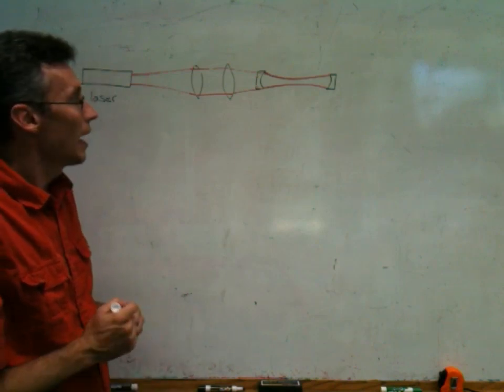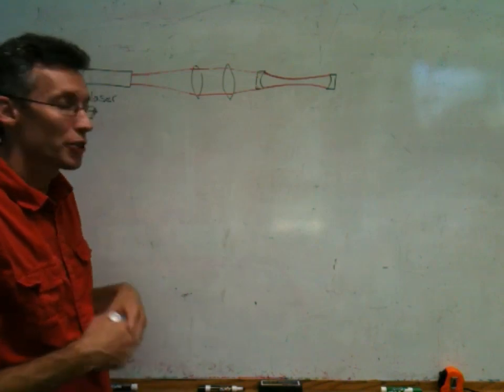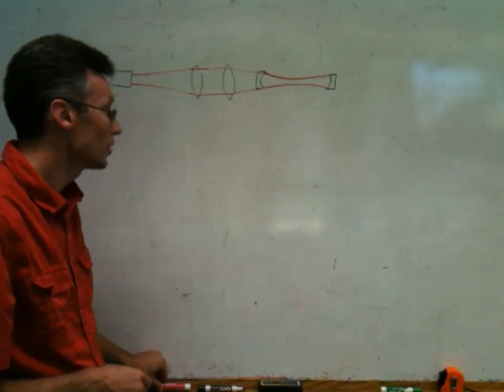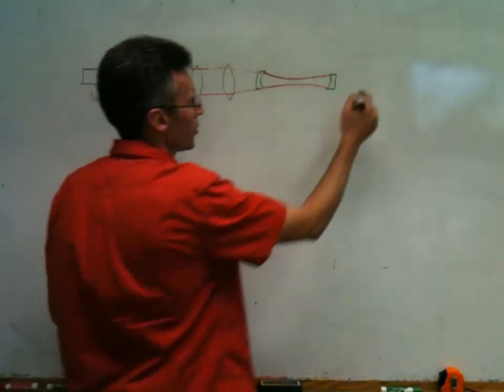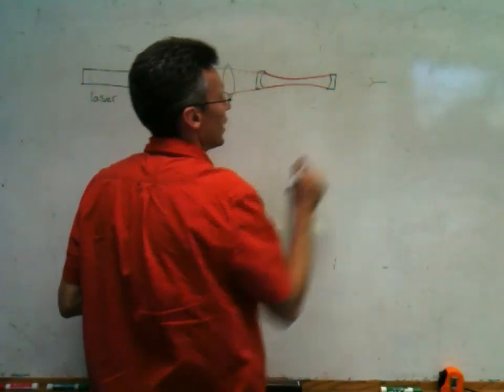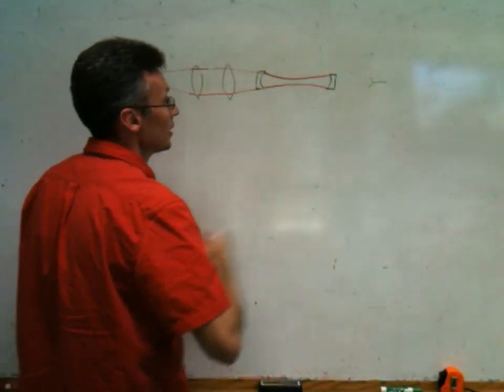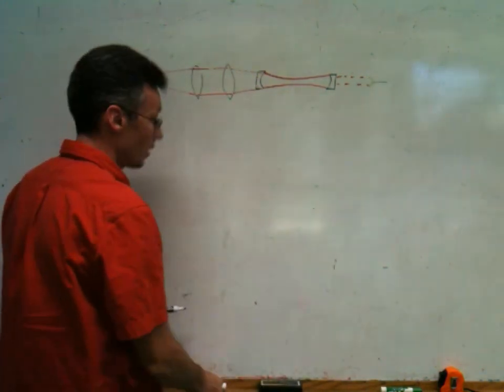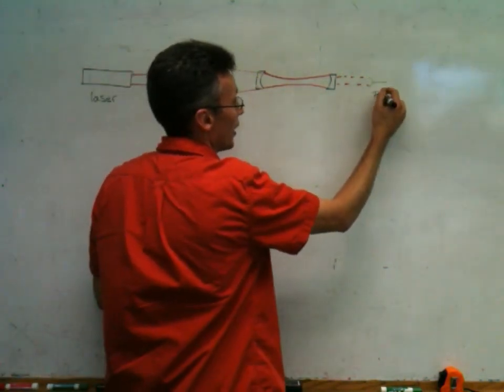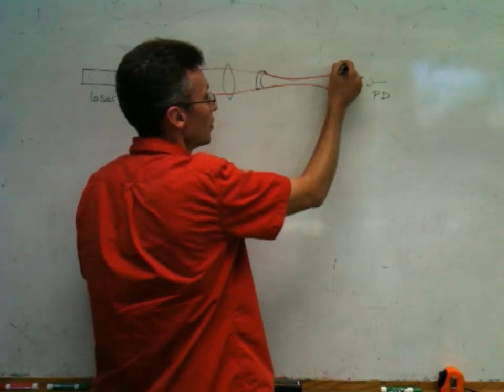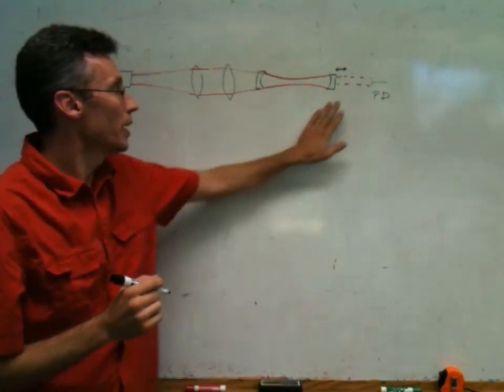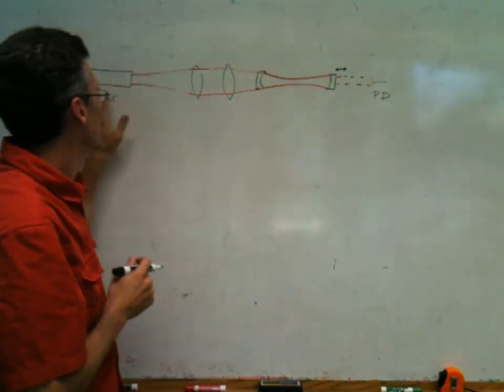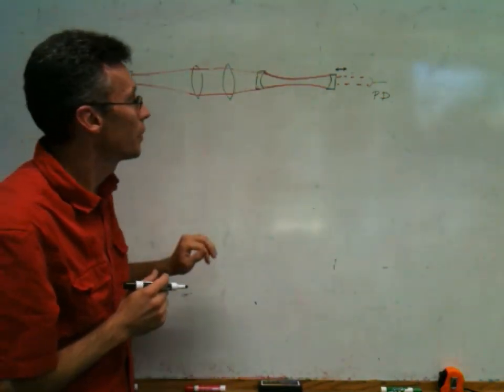Now, we can tell when we have our cavity mode matched, or we can tell how much deviation we have from ideal mode matching. If we put a photodetector at the output of our cavity, we detect the light that leaks out, and then we drive one of the mirrors back and forth. Presumably we have a piezoelectric transducer on a mirror. We could also drive the laser frequency, if that's an option.